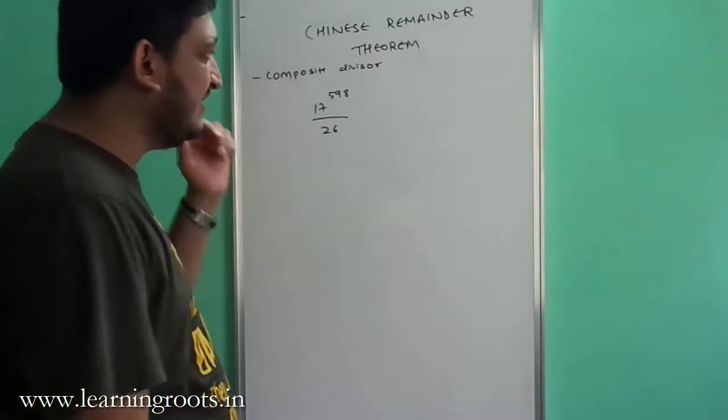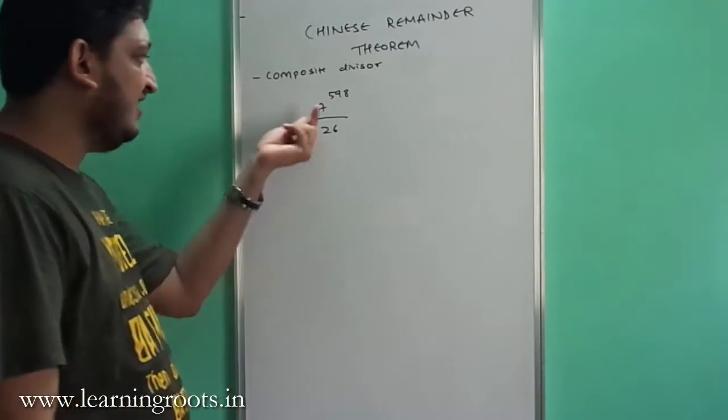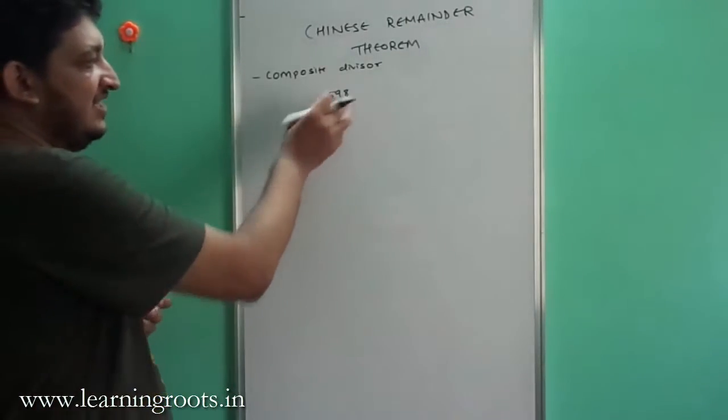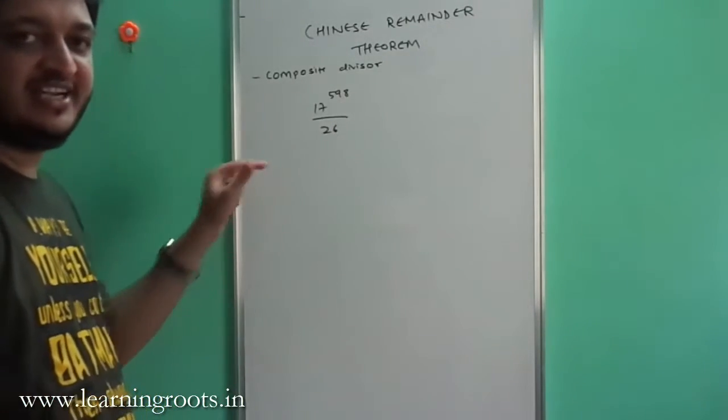Now we will do another example from Chinese Remainder Theorem. Again, the denominator you see is 26 and you have to find the remainder of 17 raised to 598 mod 26.